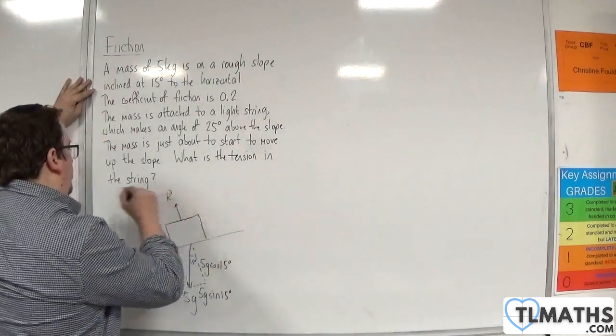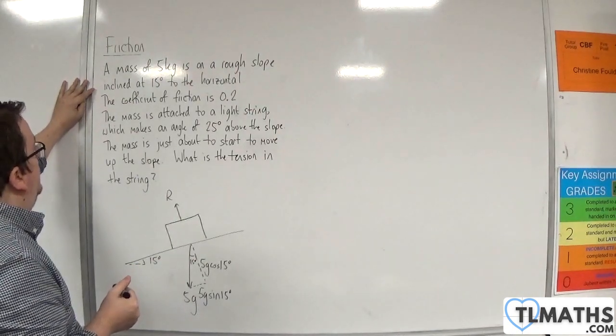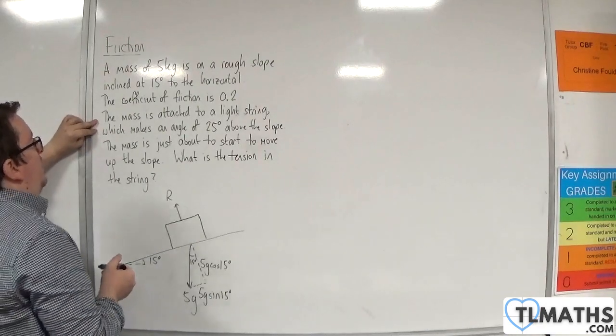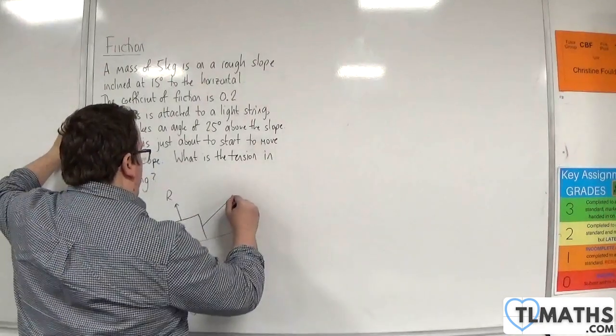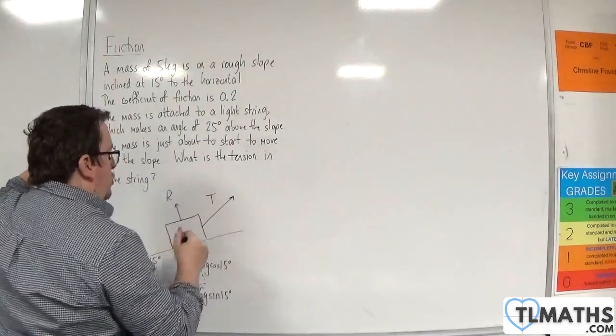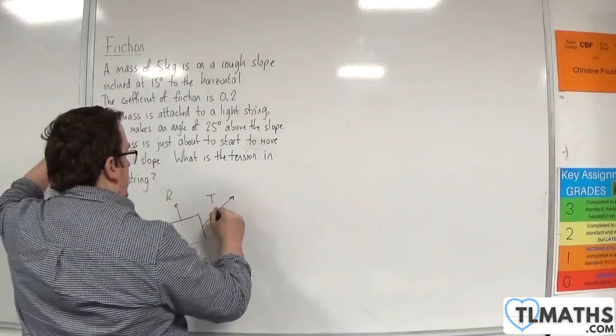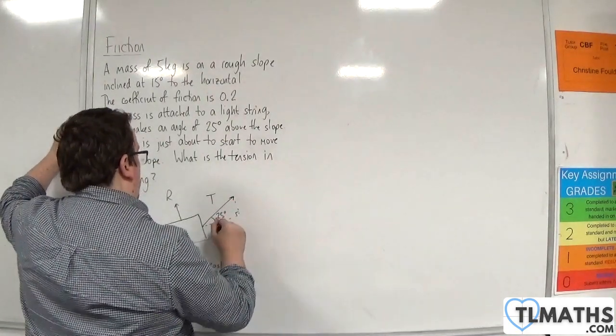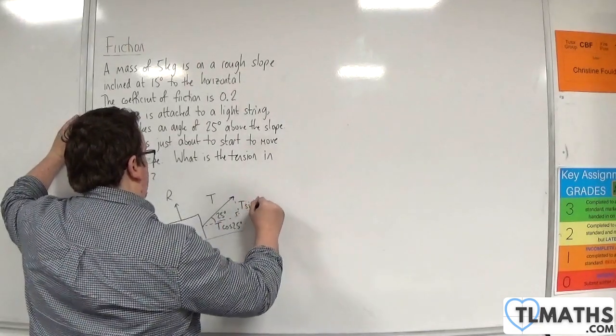And it's going to be a normal reaction force perpendicular to the slope. The mass is attached to a light string which makes an angle of 25 degrees above the slope, so we have a string with tension. This angle is 25 degrees. We're going to complete the triangle, so this is T cosine 25 and this is T sine 25.